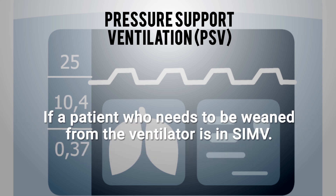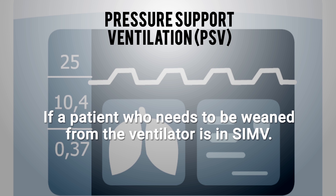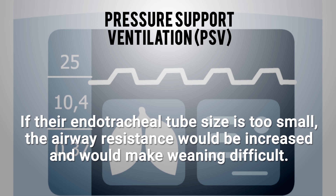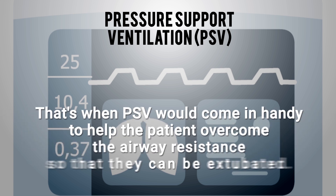For example, if a patient needs to be weaned from the ventilator and they're in SIMV mode, but the endotracheal tube size is too small, airway resistance would be increased, making weaning difficult. Pressure support would come in handy here because it would help the patient overcome the airway resistance so they can be weaned and extubated from the ventilator.